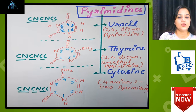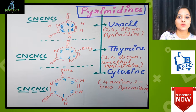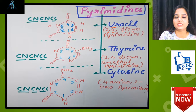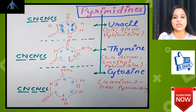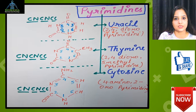Here you can see the structure of uracil. It is also known as 2,4-di-oxo — 'di' means two oxygen atoms are present — and they are on the second position and fourth position, as you can see here.